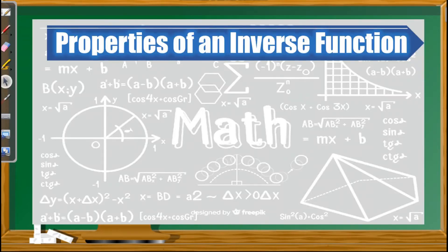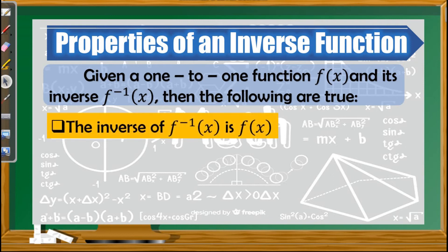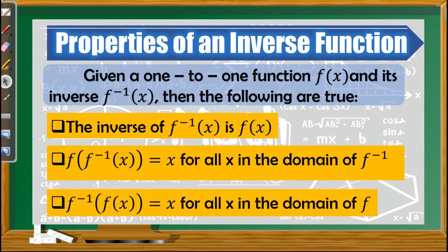For the properties of an inverse function, given a one-to-one function f(x) and its inverse f⁻¹(x), the following statements are true. The inverse of f⁻¹(x) is f(x). Second, f(f⁻¹(x)) = x for all x in the domain of f inverse. Third, f⁻¹(f(x)) = x for all x in the domain of f. These last two statements, in the form of composition of functions, help us prove that two functions are inverses of each other. All we need to do is compose one function inside the other and show that the result is equal to x.